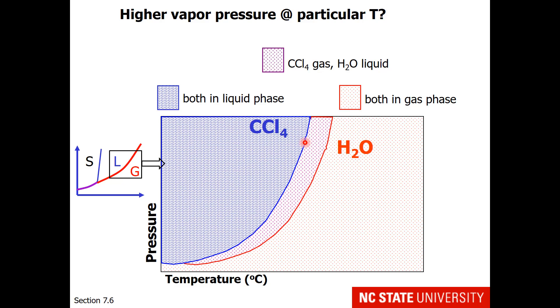So if you're asked which one has a higher vapor pressure at a particular temperature, it would be easy to just pick one temperature that intersects with both lines. This intersection would give us the vapor pressure of water at that temperature, and this intersection would give us the vapor pressure of carbon tetrachloride at the same temperature. Clearly we can see that carbon tetrachloride would have the higher vapor pressure.